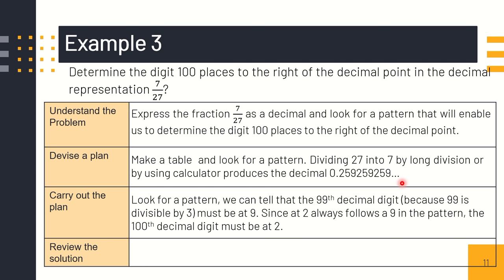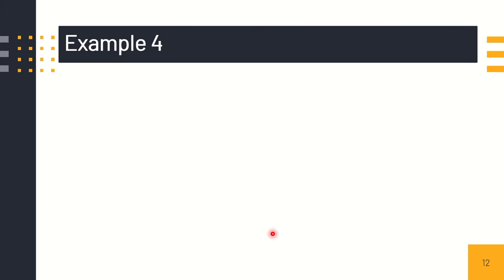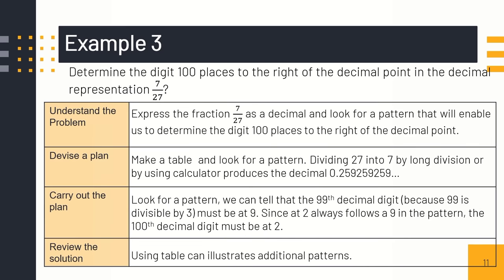Therefore, by using the pattern, we can tell that the 99th decimal digit, which is divisible by three, must be nine. Since two is always followed by nine in the pattern, the 100th decimal digit must be two. Using a table can illustrate additional patterns. It's clear that the 100th place is two.